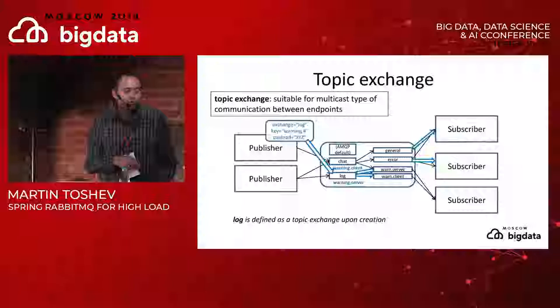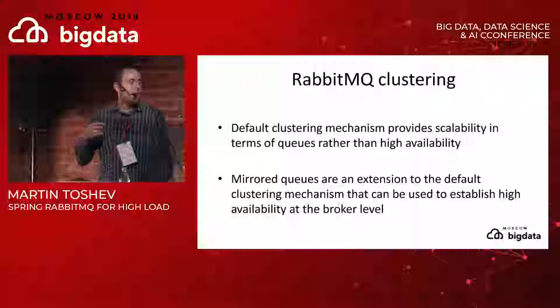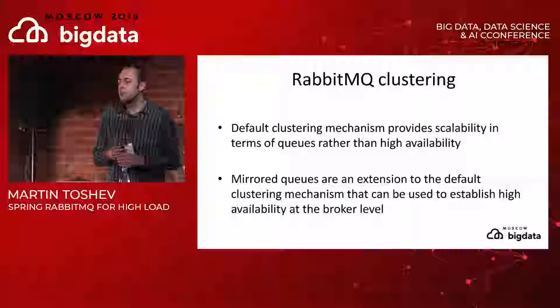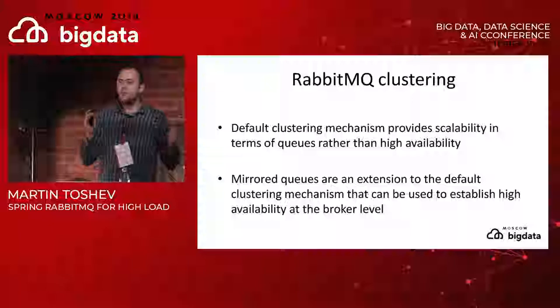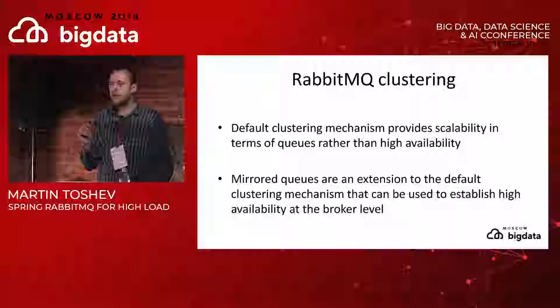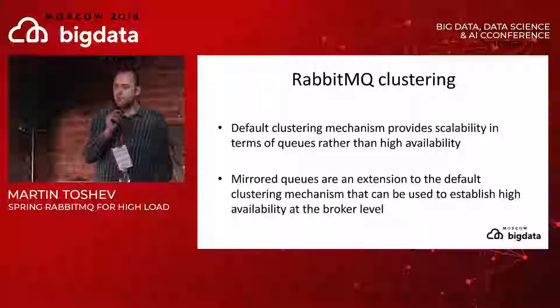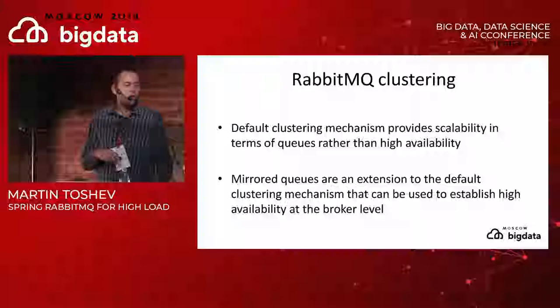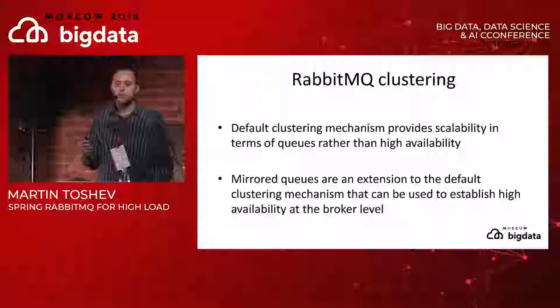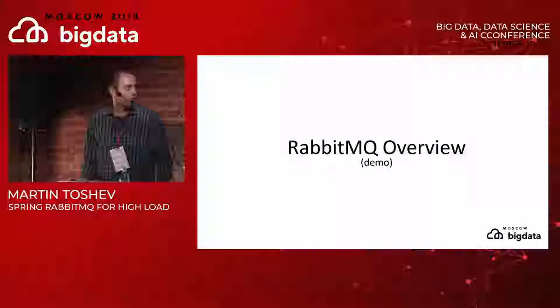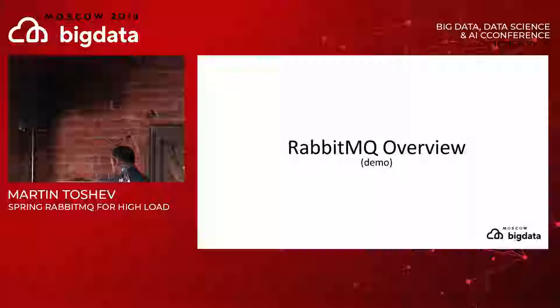In terms of clustering, RabbitMQ's clustering mechanism provides scalability over defined queues. In a cluster of three instances, each instance is responsible for handling messages for specific queues - if an instance fails you cannot consume messages from those queues. For that reason there is an extension called mirrored queues, which allows replication of messages across cluster nodes, so you can replicate messages from one node to one or more others in the cluster.